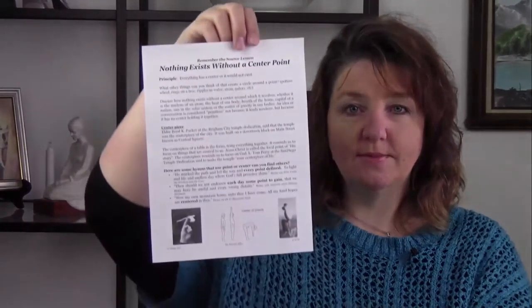For the first full week, just think, ask questions, and look at the picture. The next week — week two — you get the 'Remember the Source' lessons, remembering about Christ. It will look like this: 'Nothing exists without a center point.' It gives examples like ripples in water, the rings of a tree, or a potter's wheel. Lots of things have center points. It also covers centerpieces — several prophets talk about temples being a centerpiece or symbol for our religion. There are also quotations from scriptures and hymns that you can discuss.